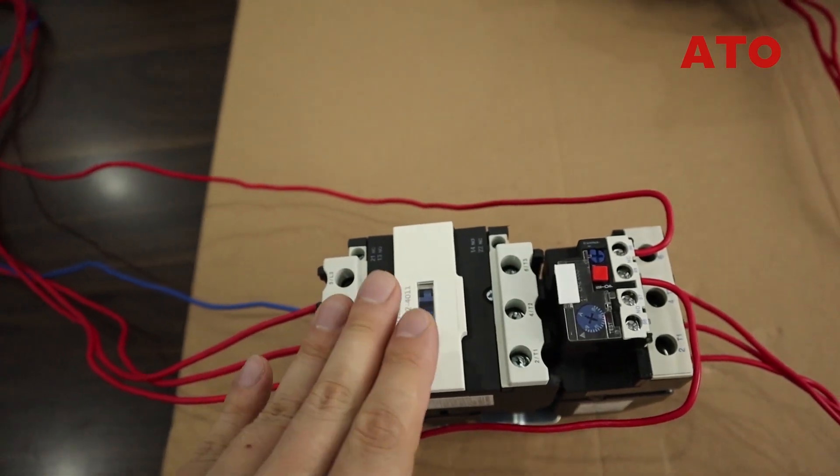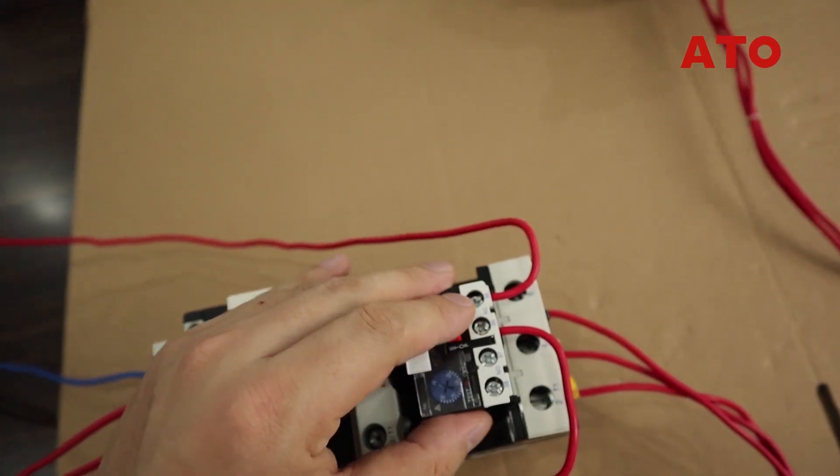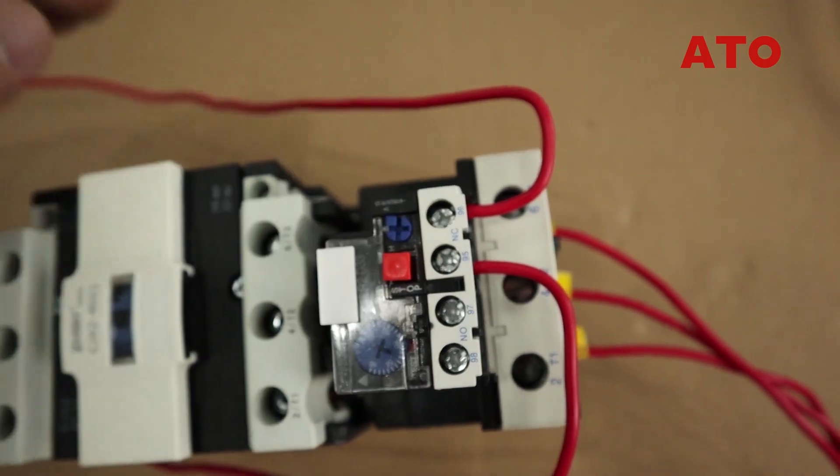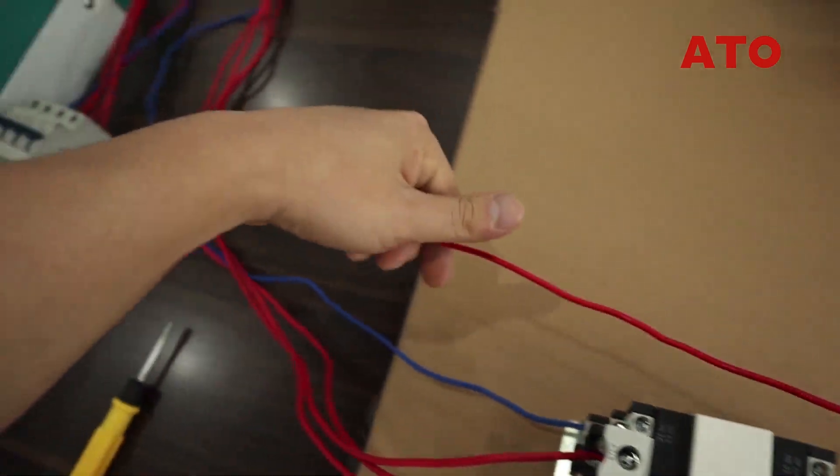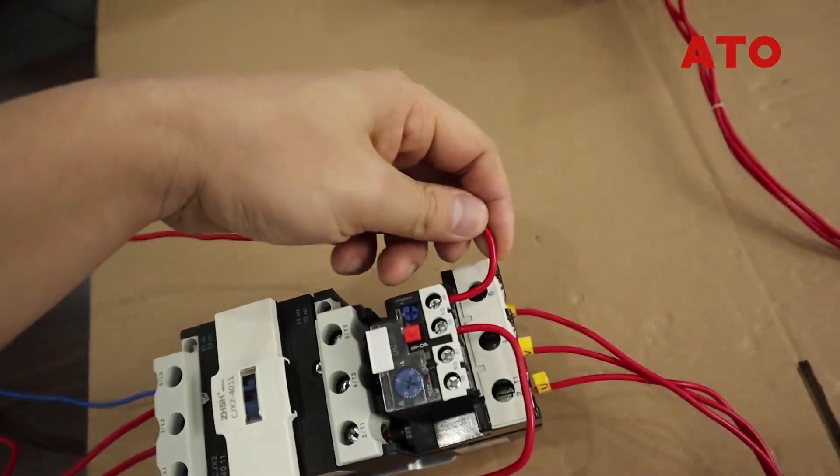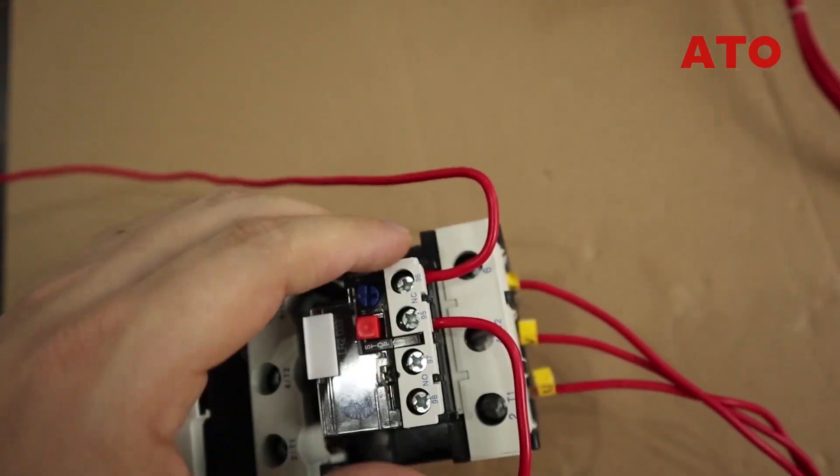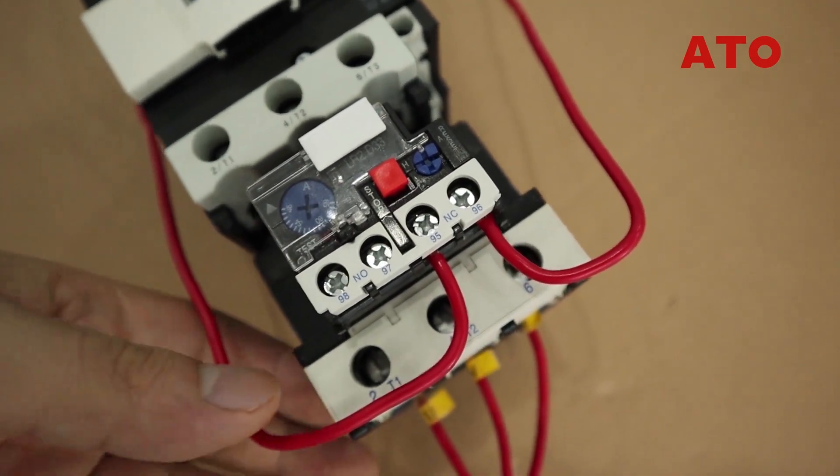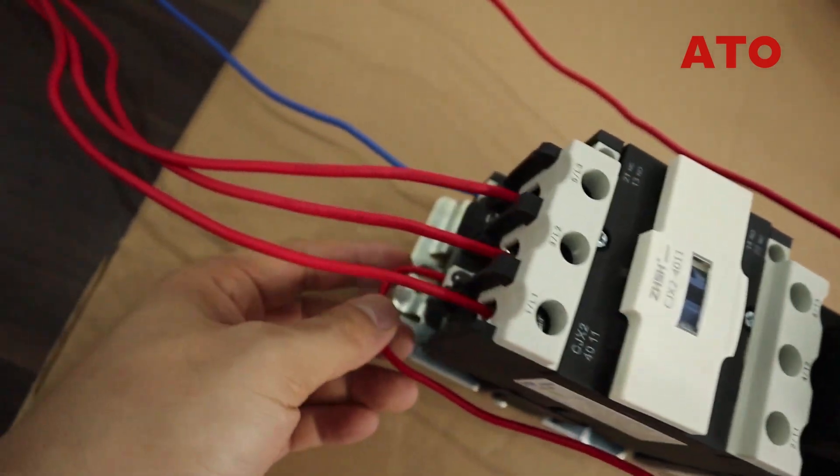You can select between normally open or normally closed contacts on the relay to control the coil of the contactor. Here we'll use the normally closed contacts. The hotline is wired to one of the normally closed contacts and the other one is wired to the coil of the contactor.